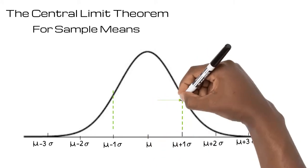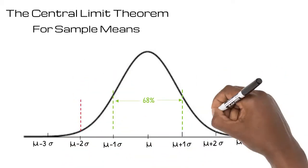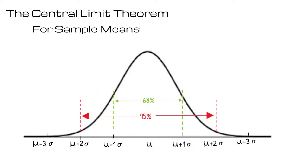More specifically, 68% of sample means lie between one standard deviation below and one standard deviation above the mean of the population. 95% of sample means lie between two standard deviations below and two standard deviations above the mean of the population.